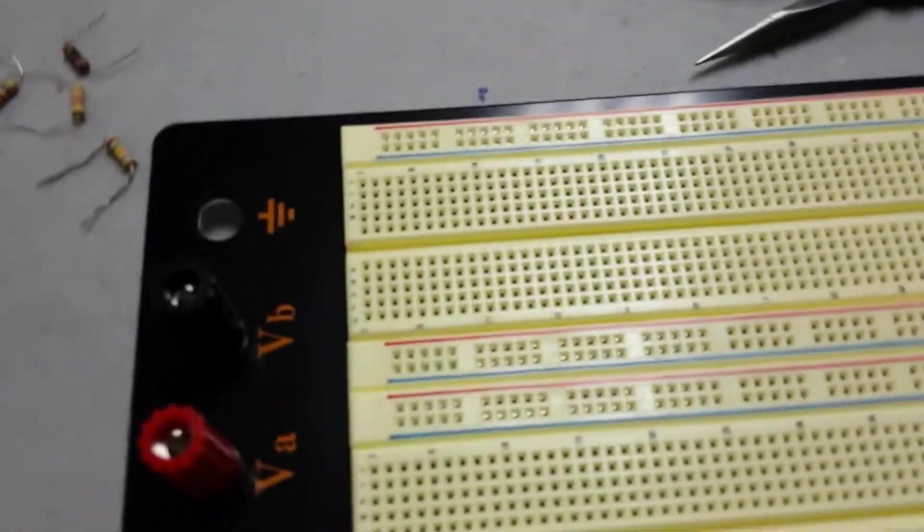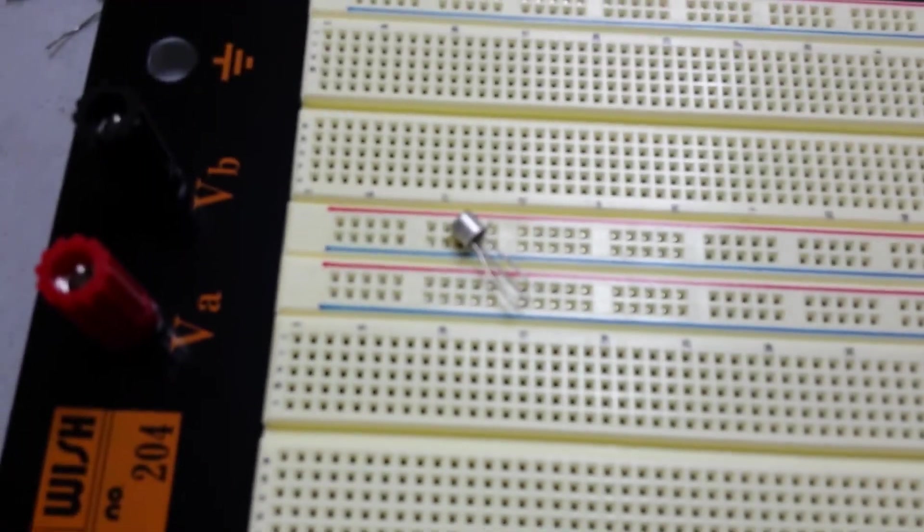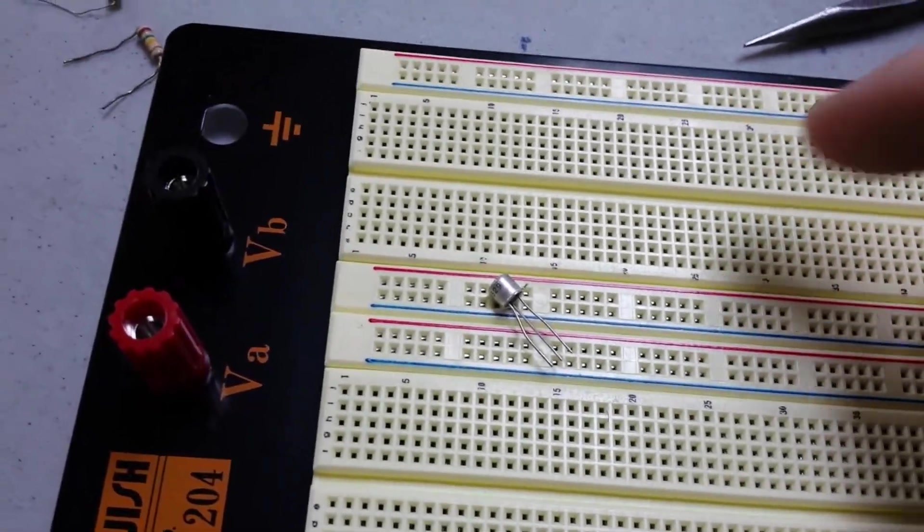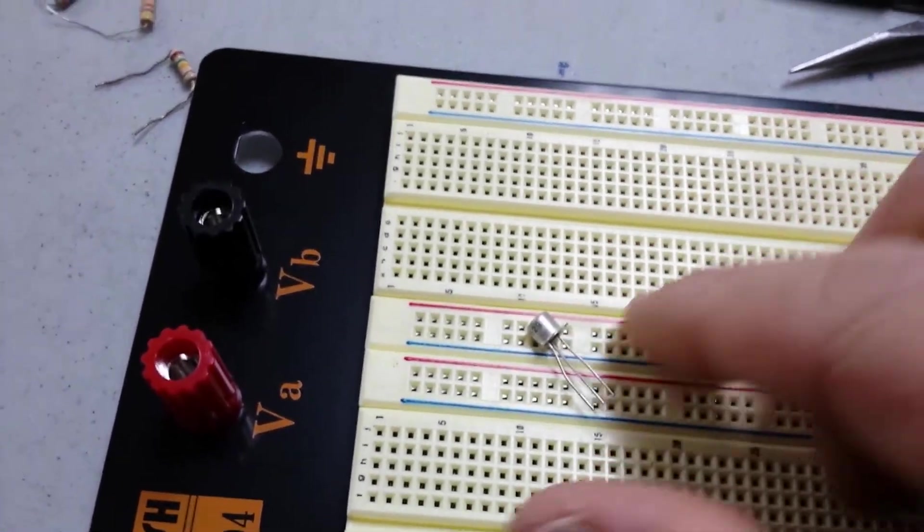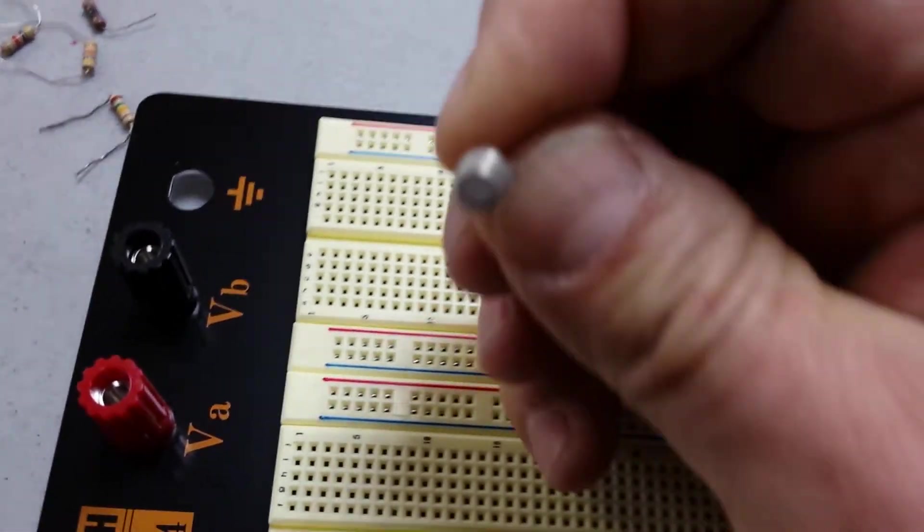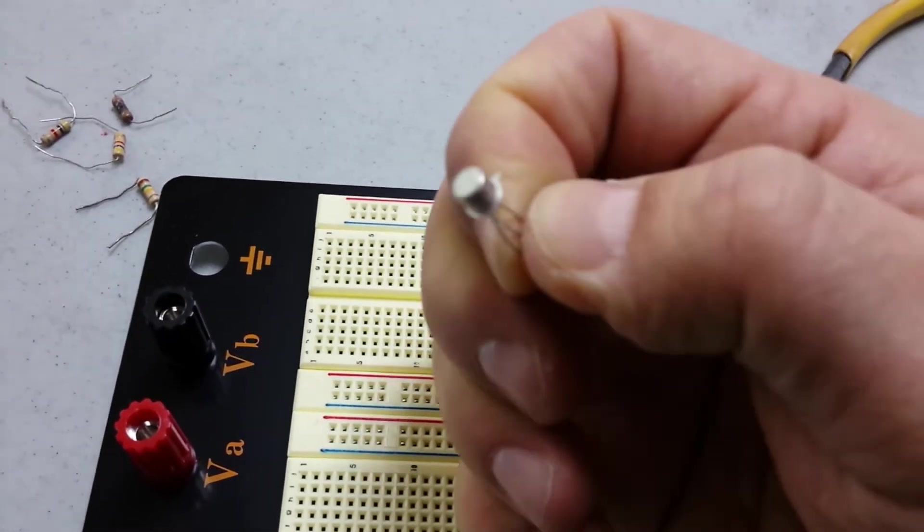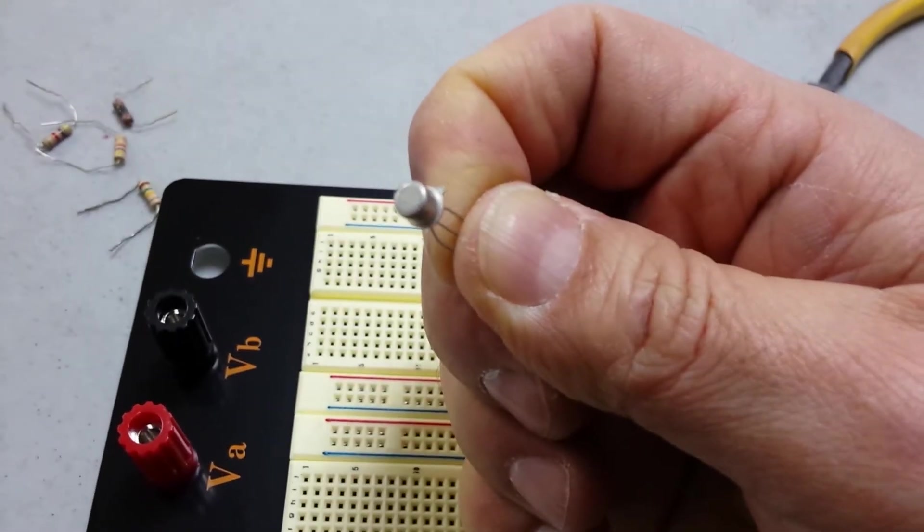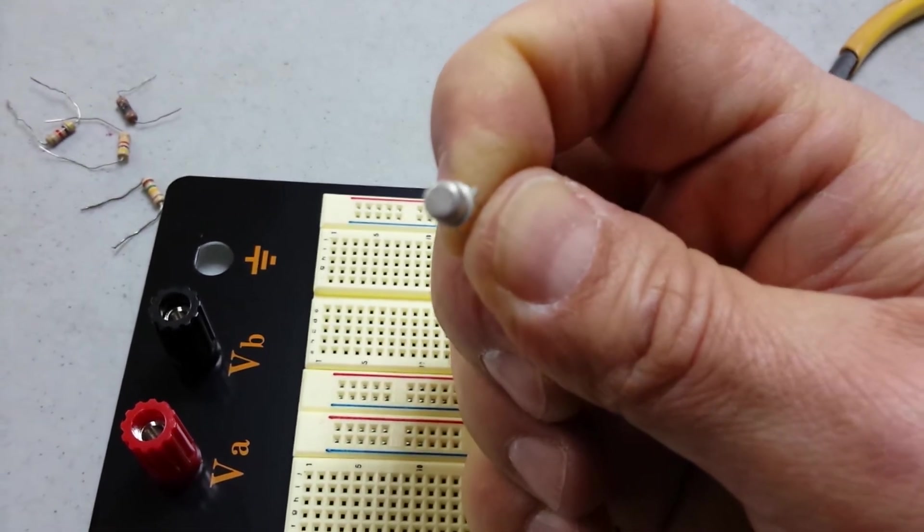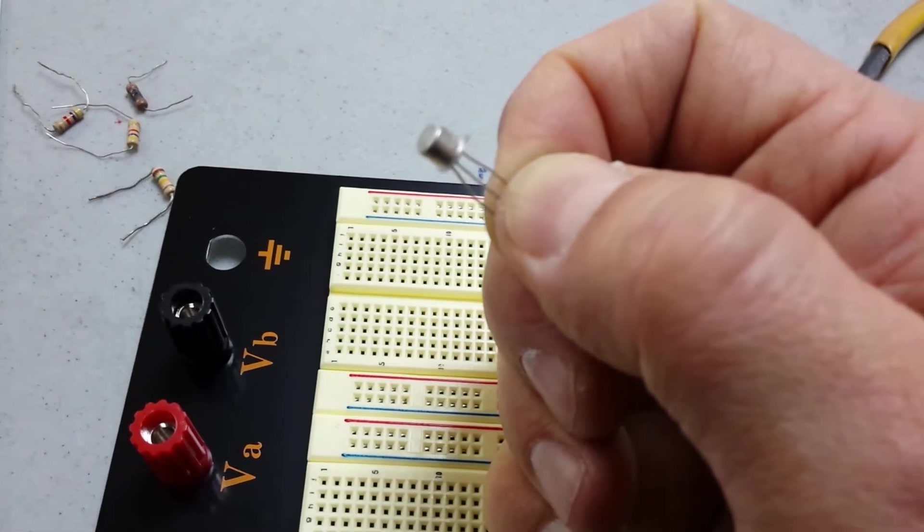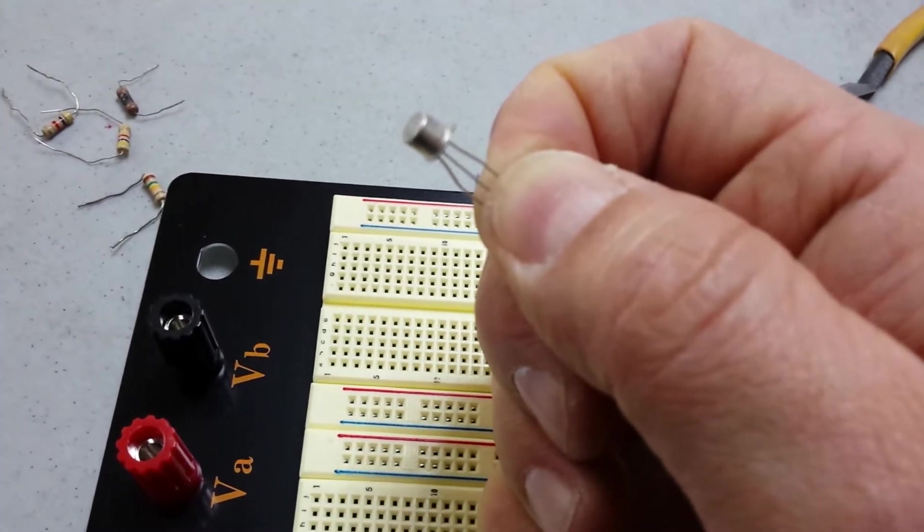So what I want you to do is take the 2N2222. What you'll notice on the 2N2222 or on the metal canisters is that there's a little part that sticks out right over here. So if I grab it, you'll see that on the very top there's a little protruding part right there. You see it on the right-hand side. So the pin right underneath that one there is your emitter, followed by the center one, which is the base, and the last one, which is your collector.